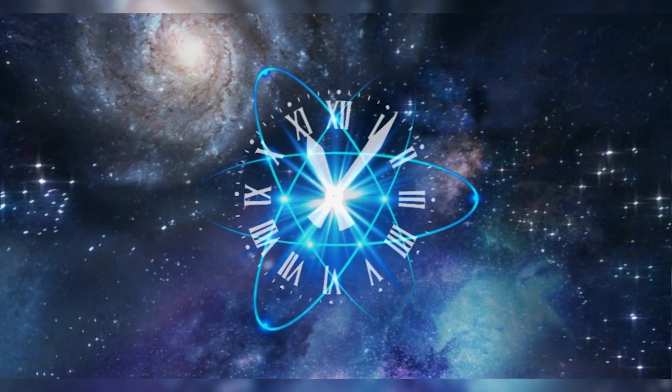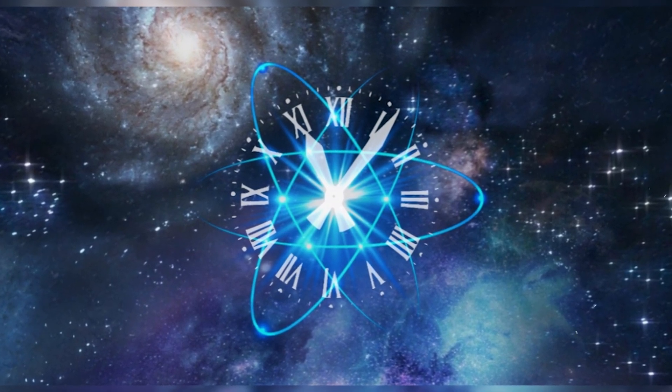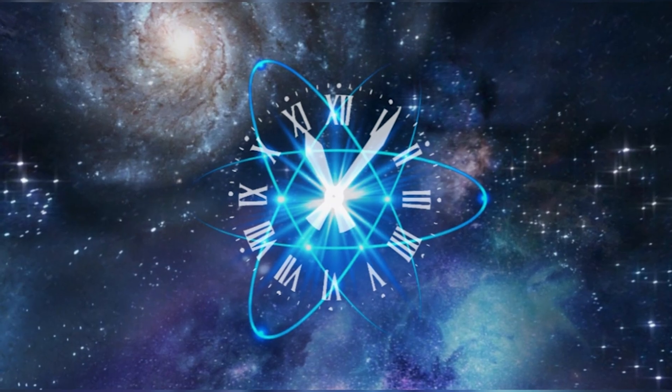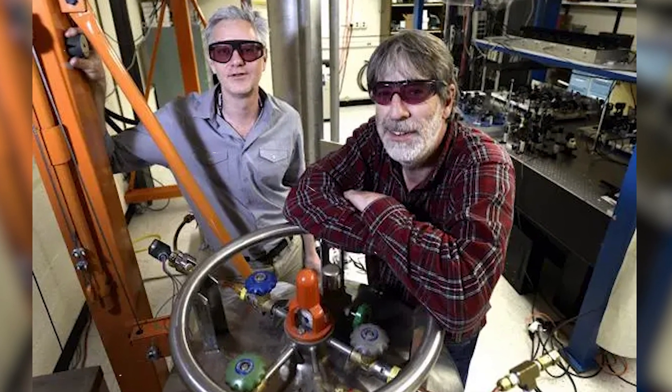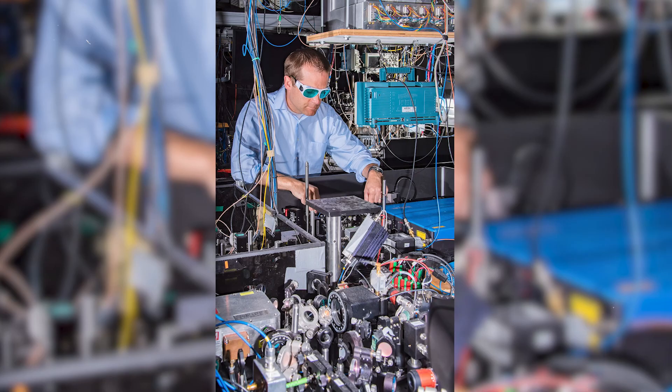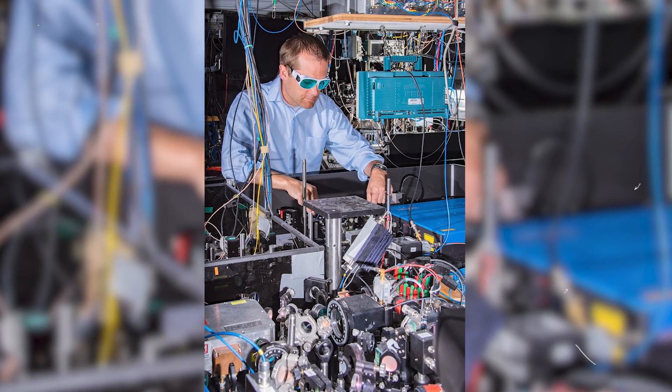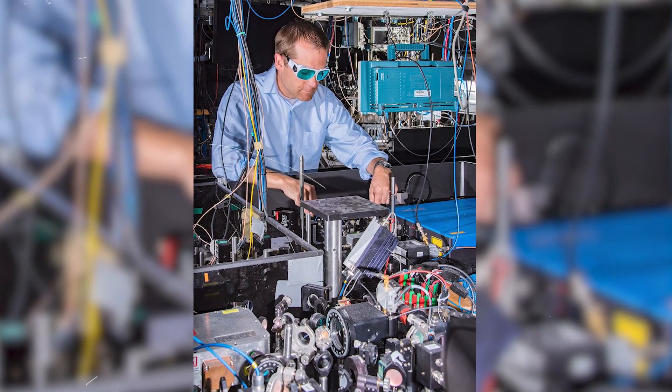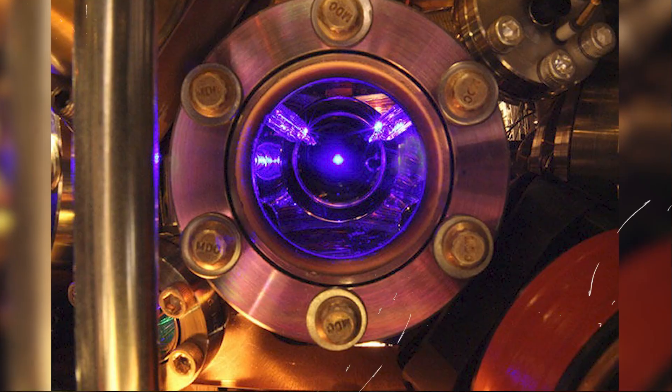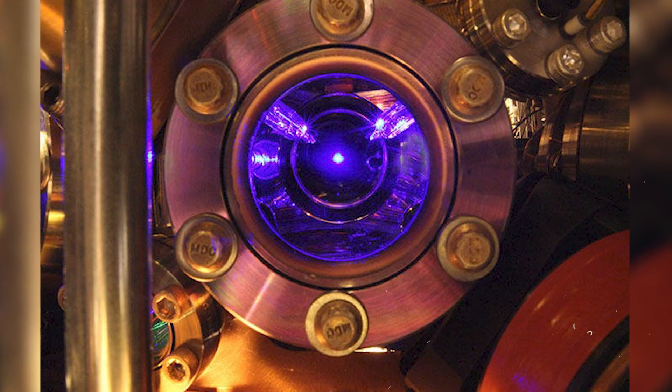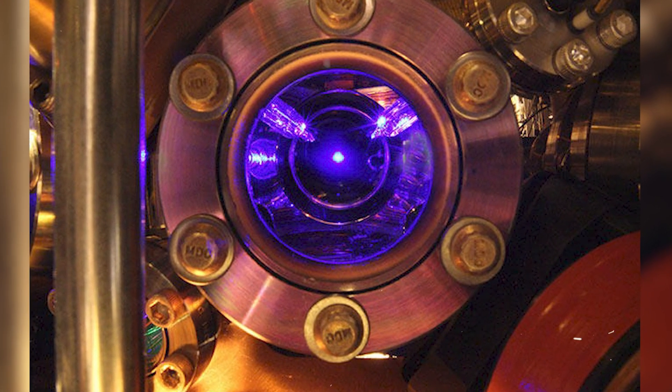This meticulous process ensures that the clock maintains a highly stable and accurate timekeeping system. The NIST-F1 is considered one of the most accurate clocks in the world. Its precision is such that it would lose or gain just one second every 100 million years. This level of accuracy allows the clock to serve as a reference for other atomic clocks worldwide.